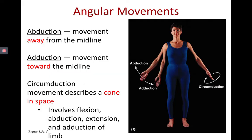More angular movements include abduction, adduction, and circumduction. Circumduction describes a cone shape, and in order to make that shape it includes flexion, abduction, adduction, and extension — so all four angular movements besides hyperextension. Abduction means moving a body part away from the midline; adduction means moving that body part toward the midline.